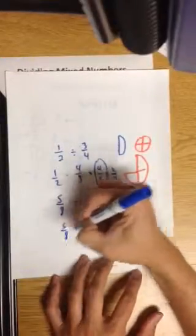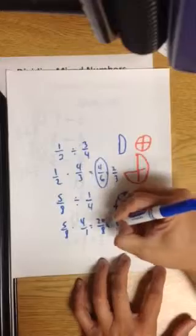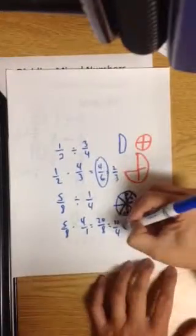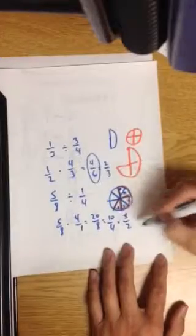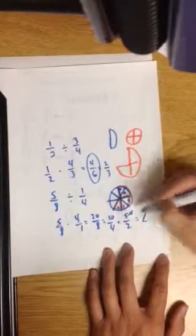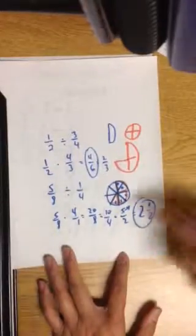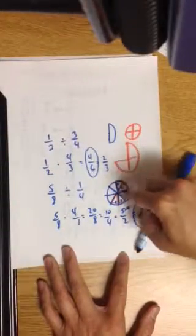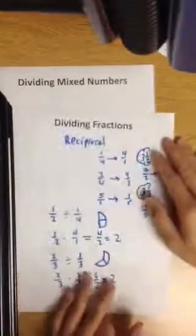And multiply. 2 over 8. Oh, even. Simplify. 10 fourths. Even. Simplify. 5 halves. Oh, improper. How many twos go into 5? 2 times. That's 4. 2 and a half. Hey, I did get it correct. So here's 5 eighths. How many fourths fit into it? 2 and a half of them.